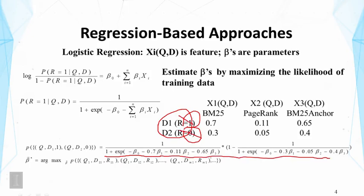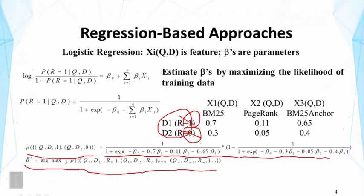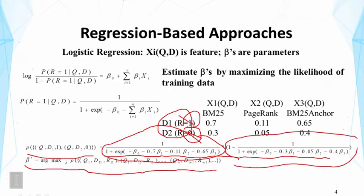Of course, this probability depends on the beta values. Our goal is to adjust the beta values to make this whole likelihood expression reach its maximum — make it as large as possible. The beta values are the parameter values that maximize this whole likelihood expression. That means we choose beta to make the probability for D1 as large as possible and also make the one-minus term for D2 as large as possible, which is equivalent to making the linear combination for D2 as small as possible. This is precisely what we want.